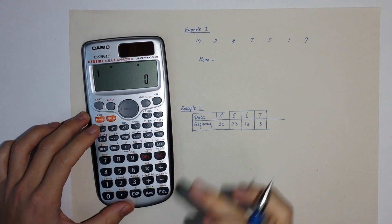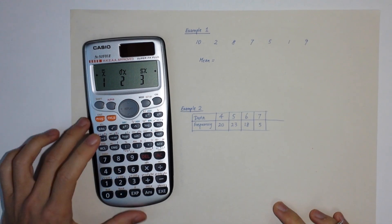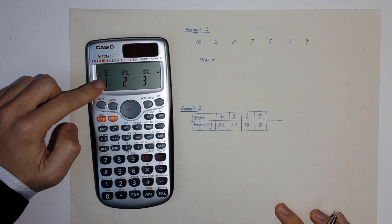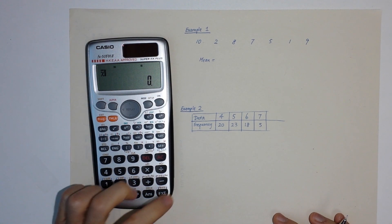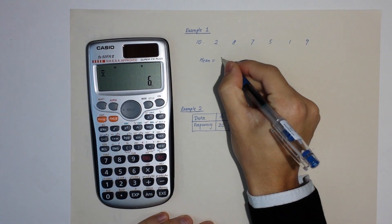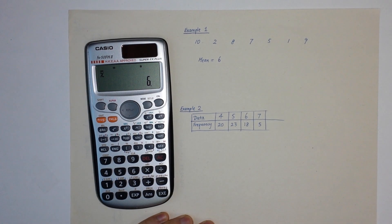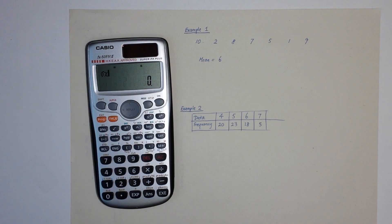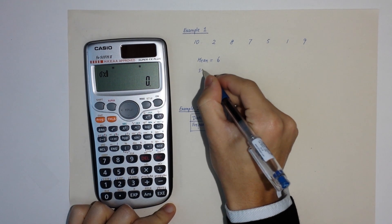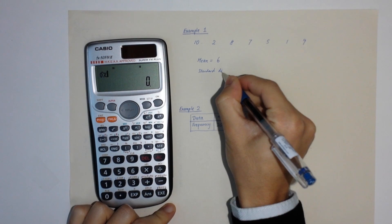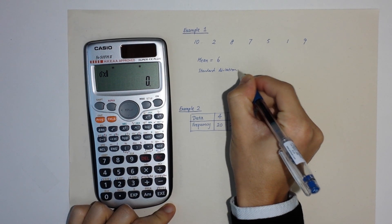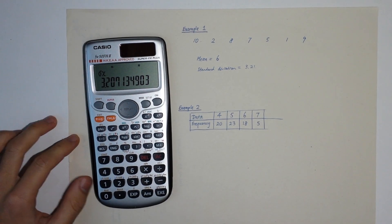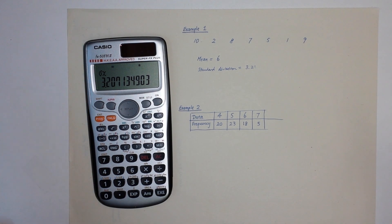To find the mean, press Shift 2 — you will see all the figures. X-bar means mean, so press 1 then EXE to get the mean, which is 6. For standard deviation, press Shift 2 and Sigma X gives the standard deviation, which equals approximately 3.21.